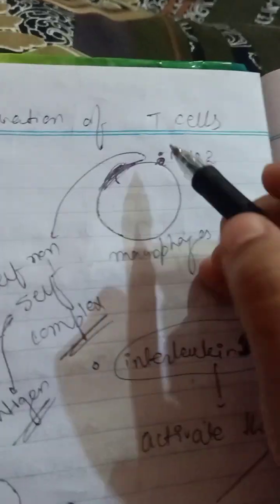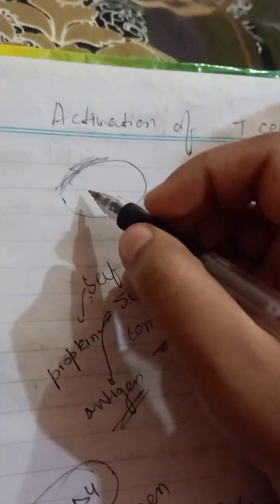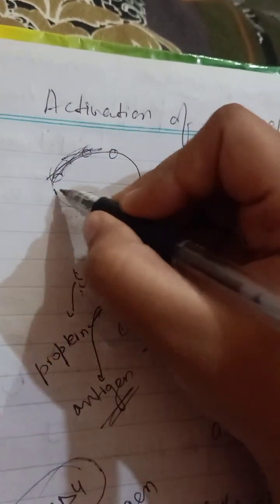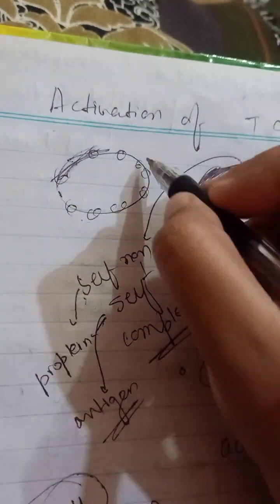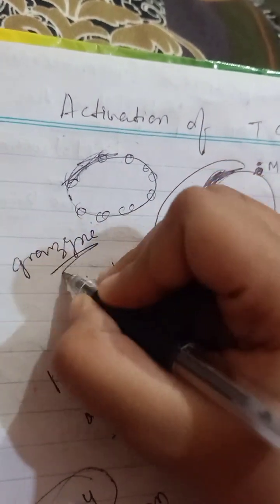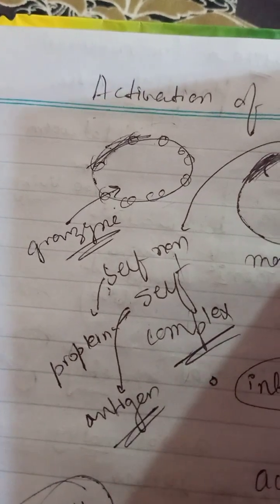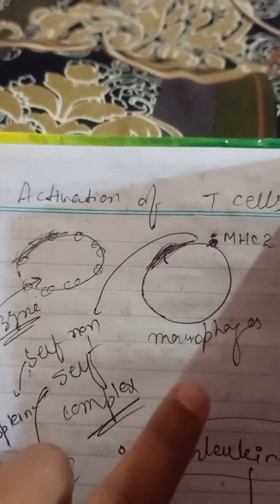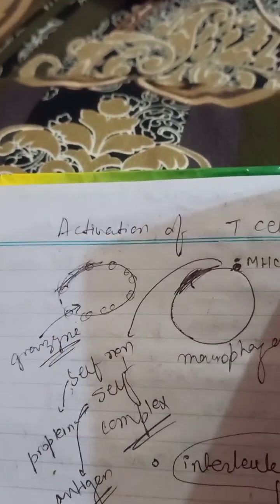Cytotoxic cells are cells which basically release perforin and granzyme to infected cells. For example, this is an infected cell surrounded by other cells. Cytotoxic cells will move towards the infected cell and release perforin, which creates holes in the cell surface, and then release granzyme enzyme. This granzyme enzyme will destroy the infected cell. This is called cell-mediated response — specific targeted cells are destroyed by the cytotoxic cells.